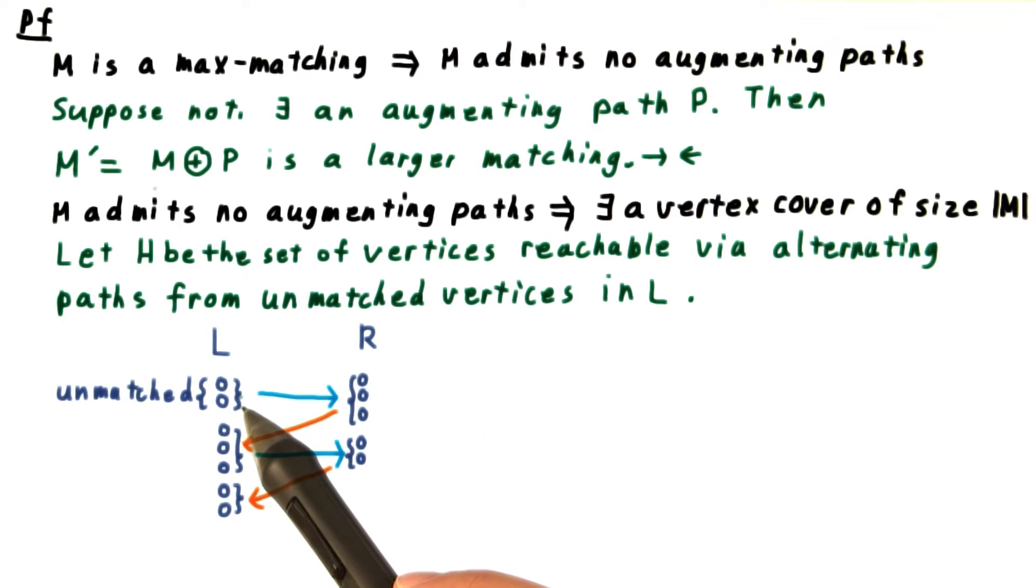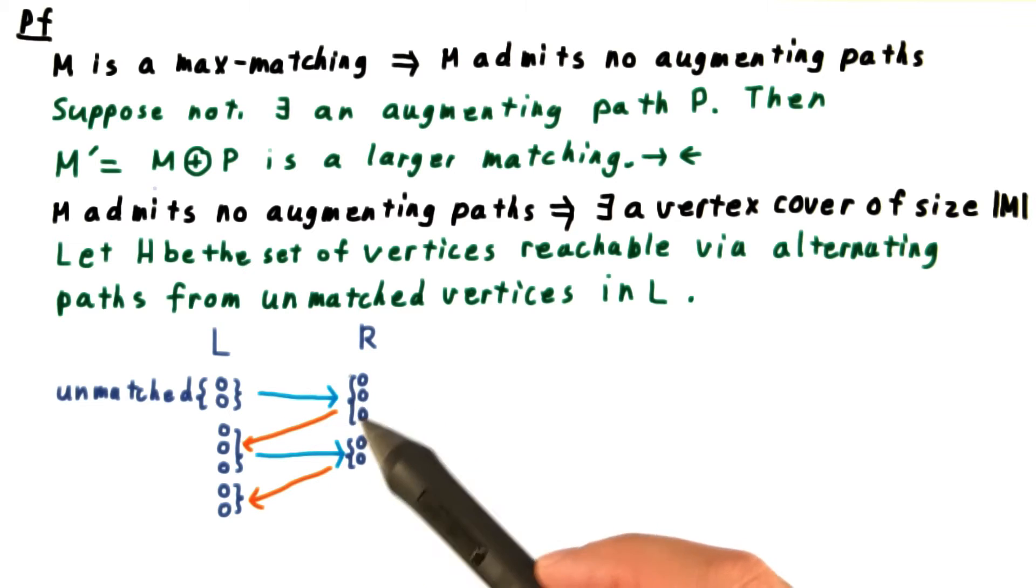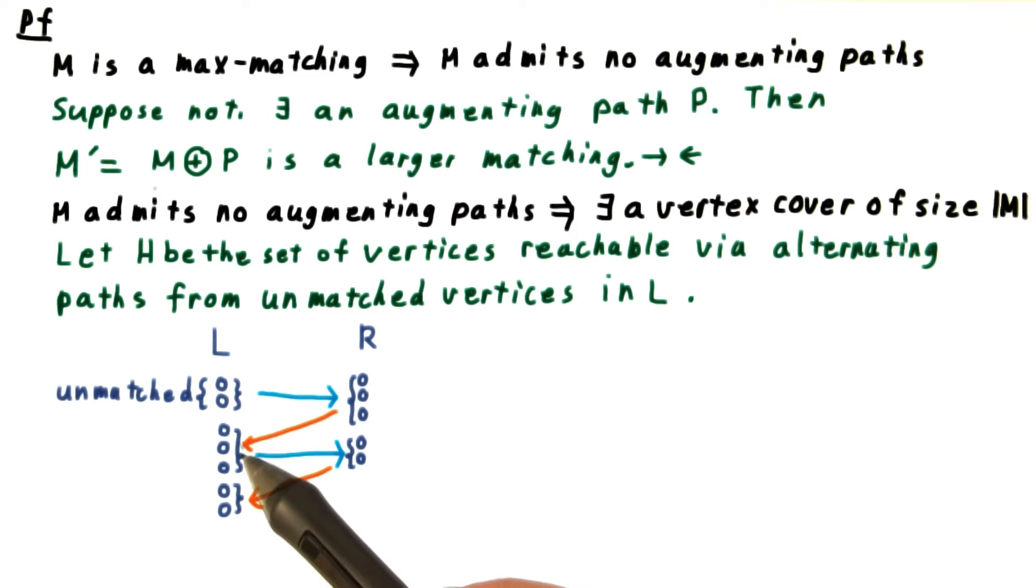Then following its outgoing edges to some elements in R, and then following all the matched edges back to matched elements of L, and back and forth, as many times as we can. Note that because the matching doesn't admit any augmenting paths, all of these paths must terminate in some matched vertex on the L side.